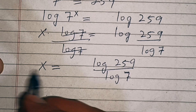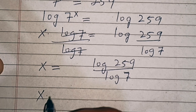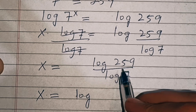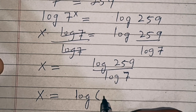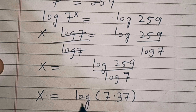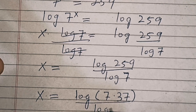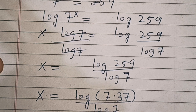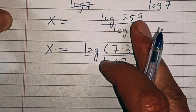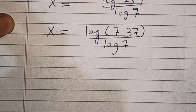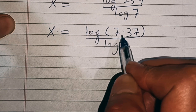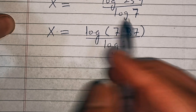In the next step, we have x equal to log of 259 over log of 7. We note that 259 is the same as 7 times 37, since 7 times 37 equals 259. Now we know that log of a times b equals log of a plus log of b.